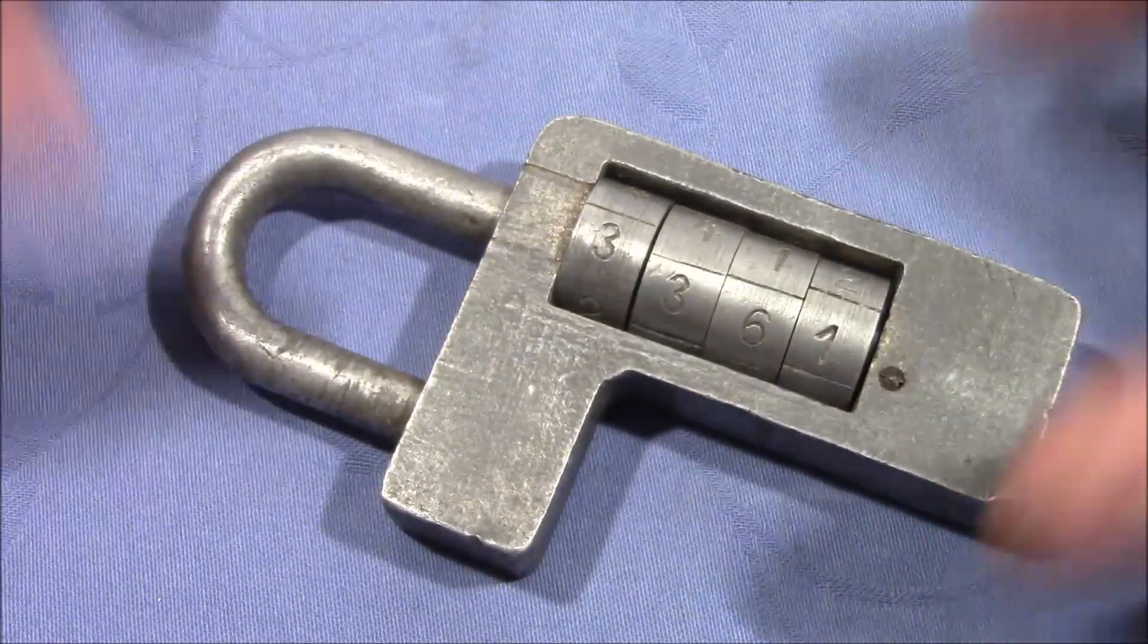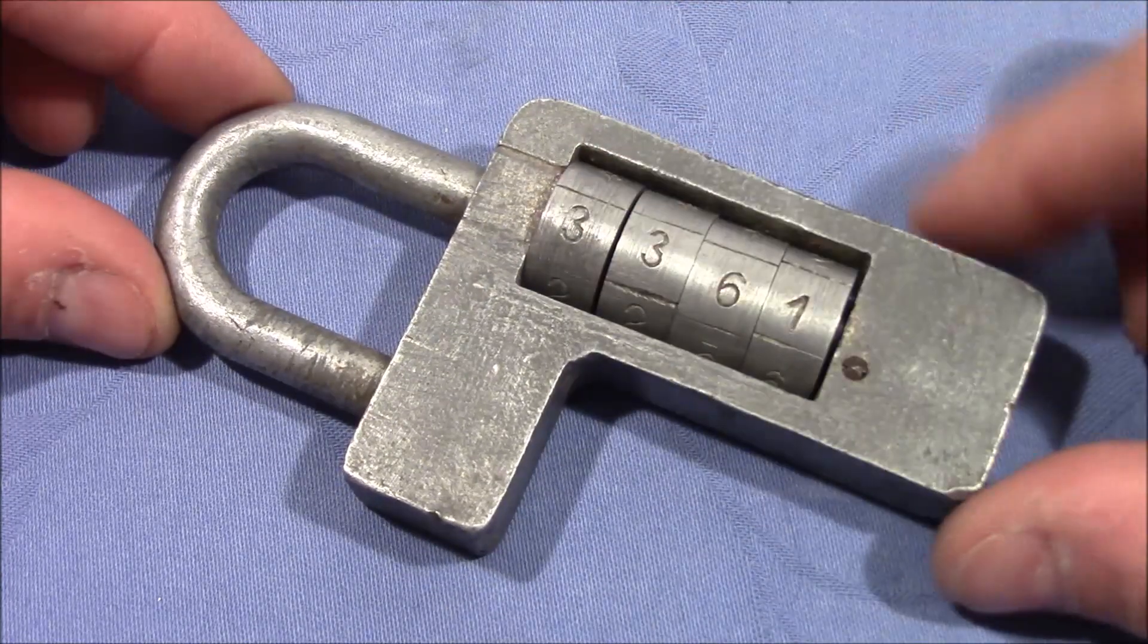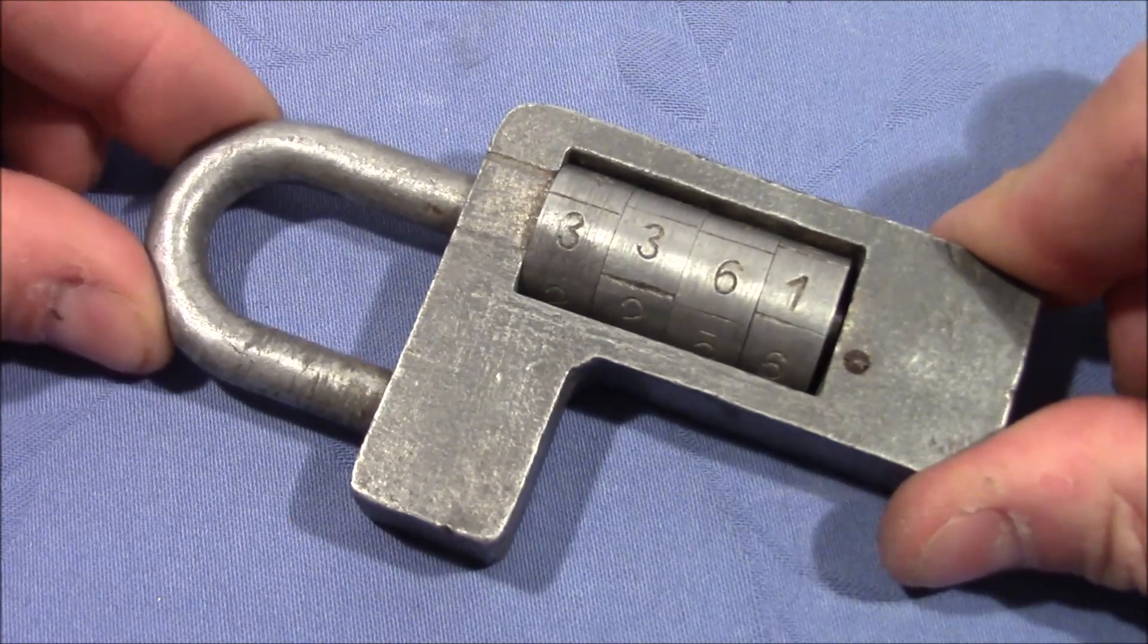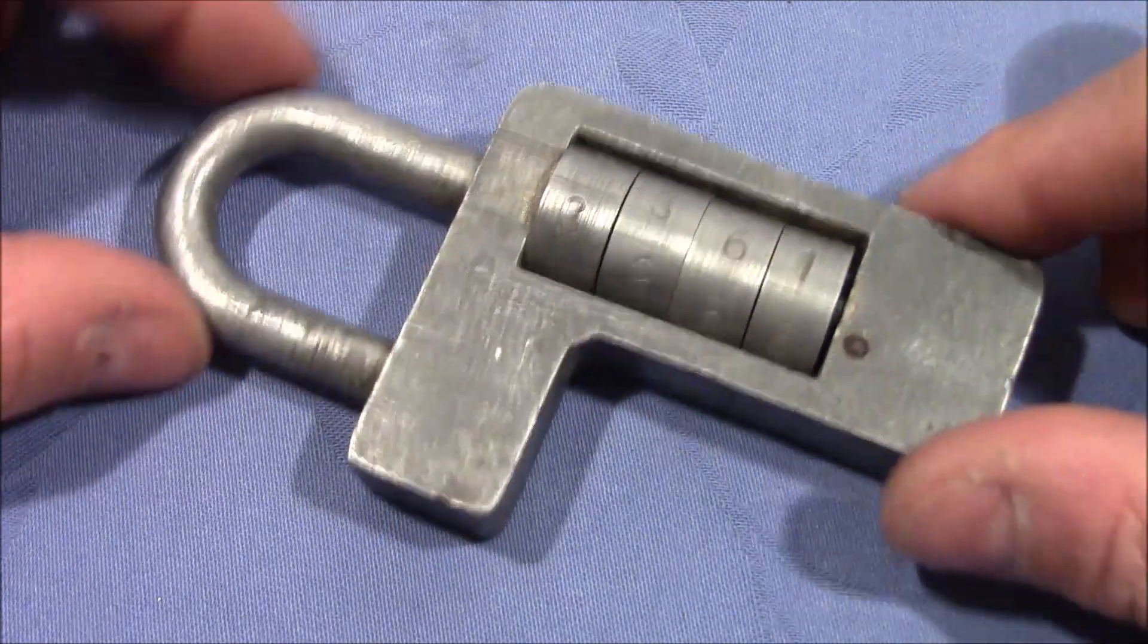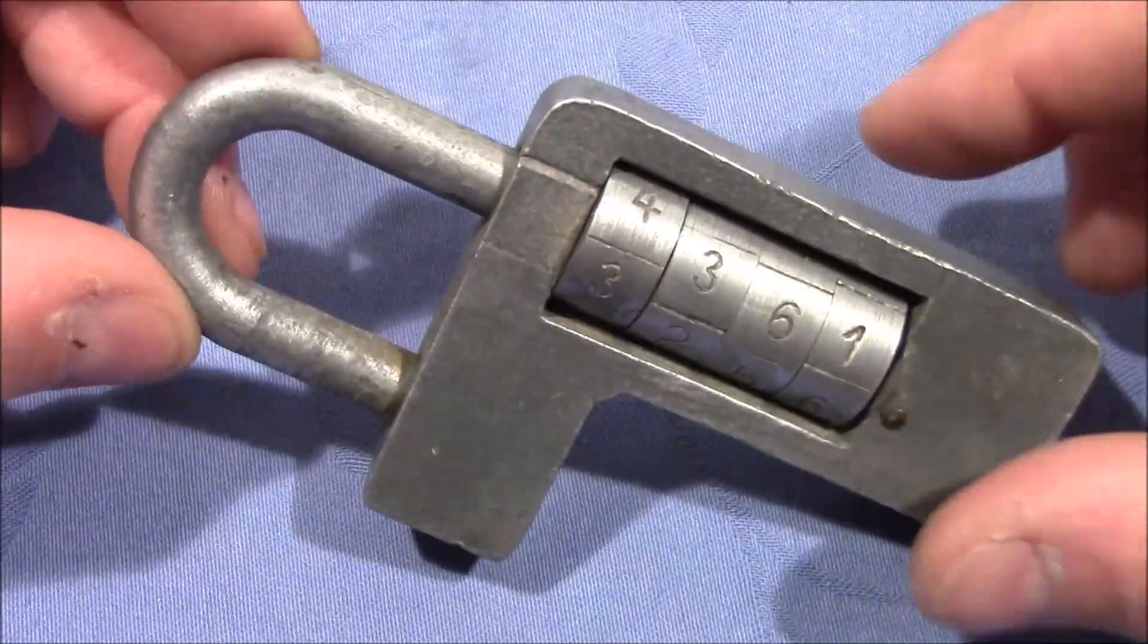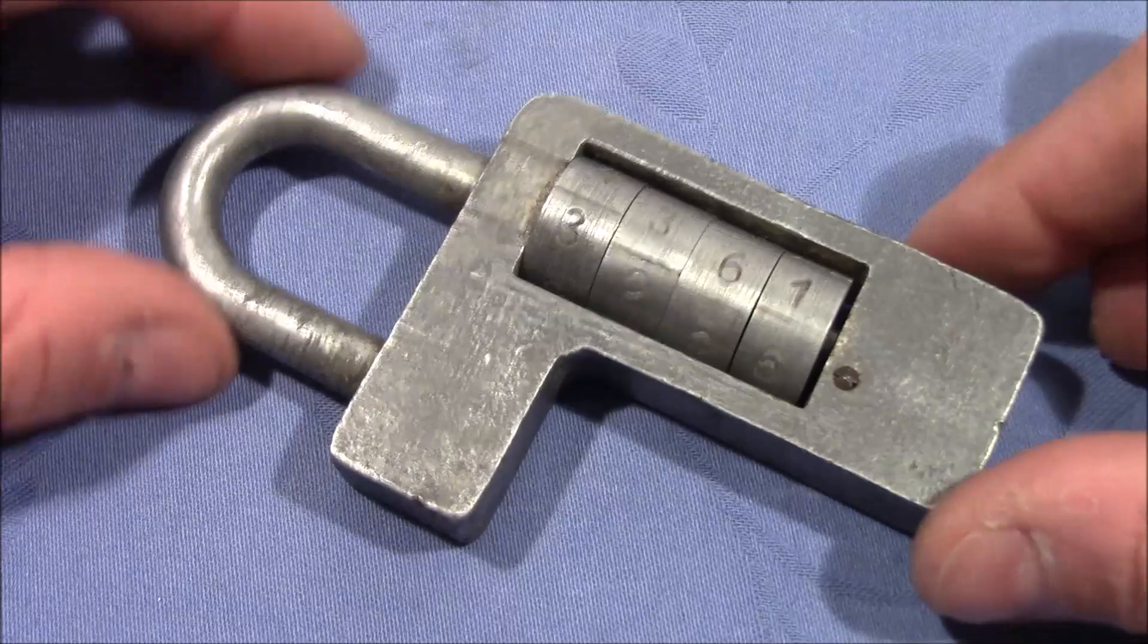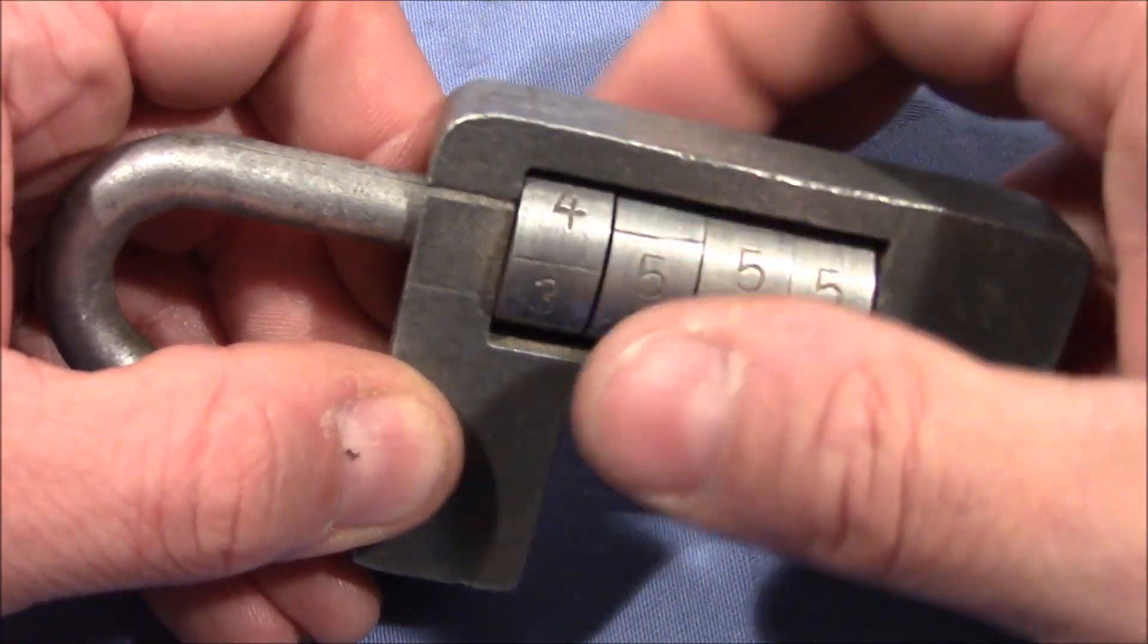Decoding this lock is very easy for two reasons. First of all, the shackle is under spring tension, that means you don't need to pull on the shackle and the lock has, so to say, a built-in decoding aid. And tolerance is pretty poor. We can see the last three wheels turn very freely but the first wheel is tight, so this is the first binder.